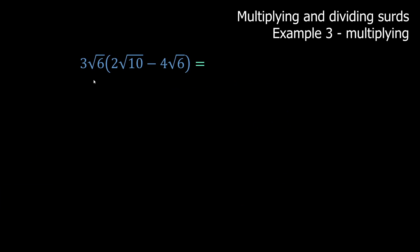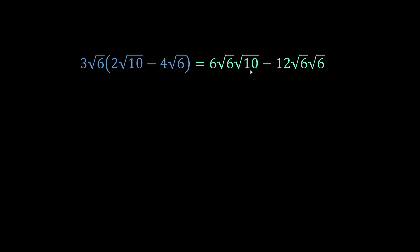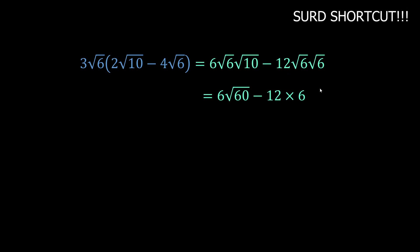We can use our rules to expand brackets. Three times two is six, giving root 6 times root 10. Three times negative four gives negative 12, and we have root 6 times root 6. Here's a shortcut: when you multiply a surd by itself — root 6 times root 6 — it just becomes the number underneath, which is 6. That's because 6 times 6 is 6 squared, and the square root brings it back to 6. So root a times root a equals a.